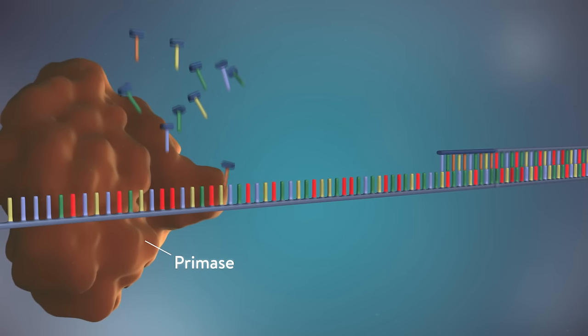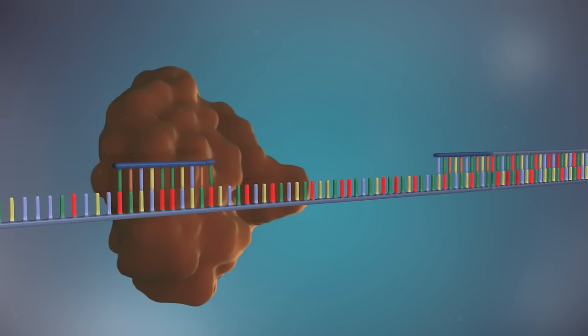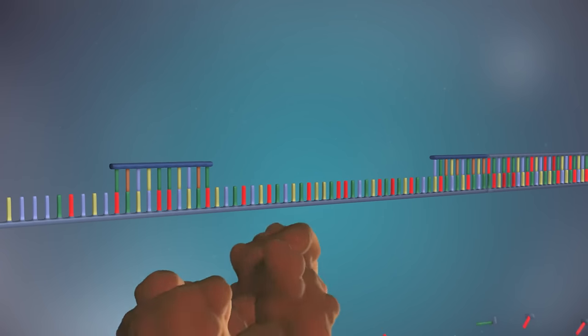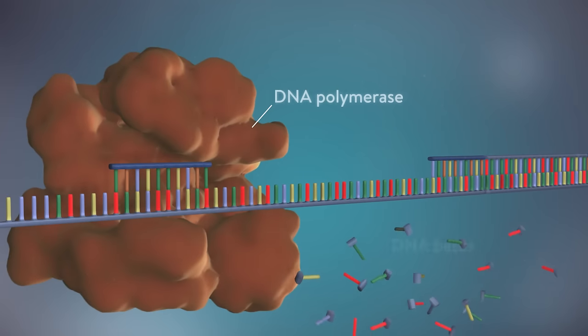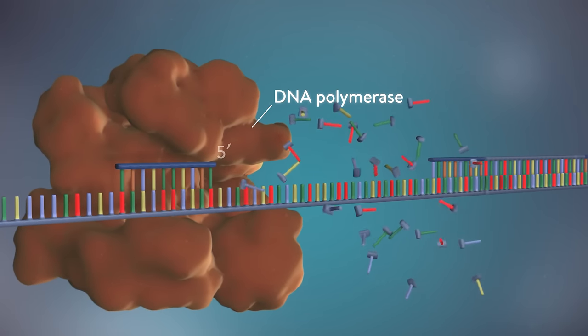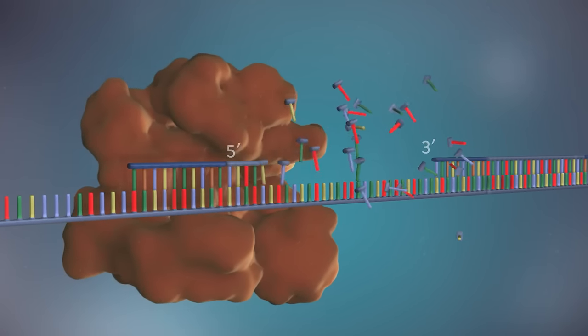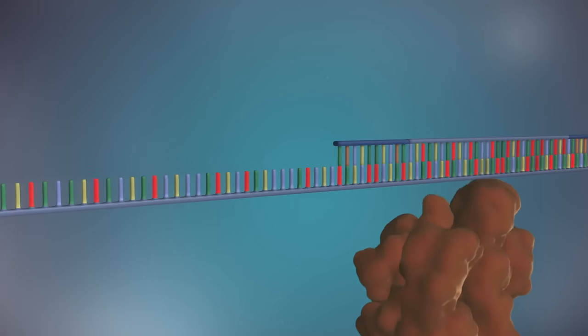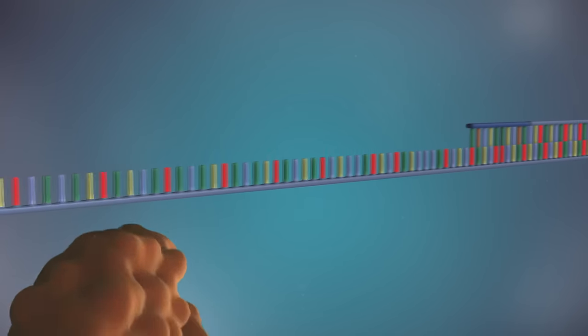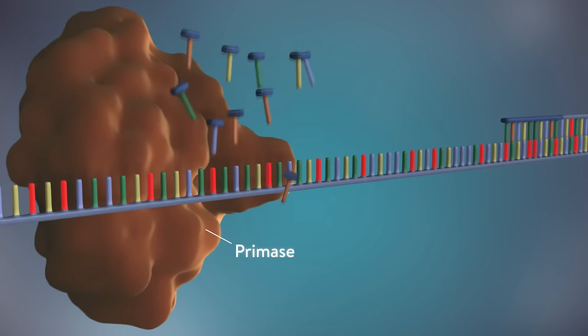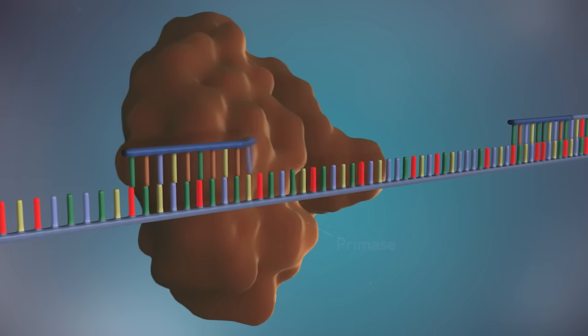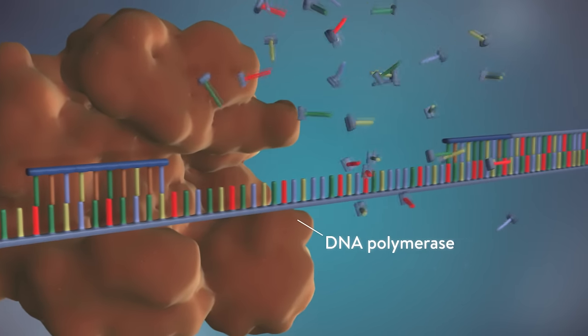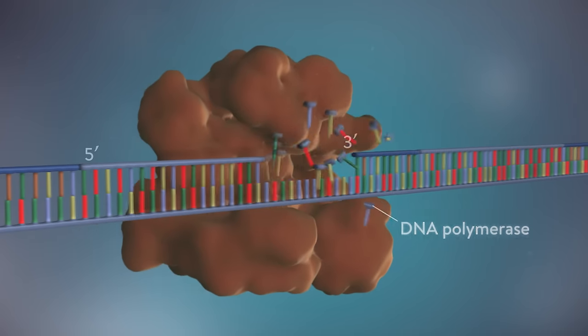Each fragment is started with an RNA primer. DNA polymerase then adds a short row of DNA bases in the five prime to three prime direction. The next primer is then added further down the lagging strand. Another Okazaki fragment is then made and the process is repeated again.